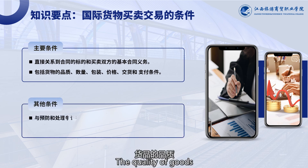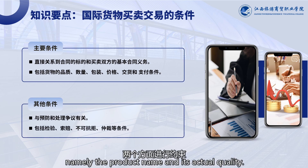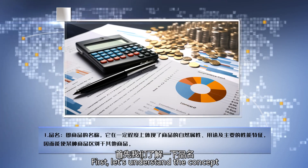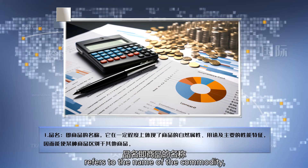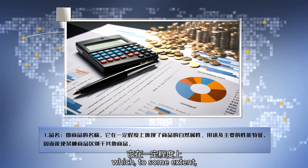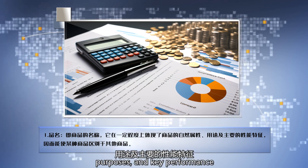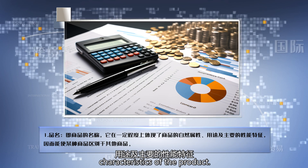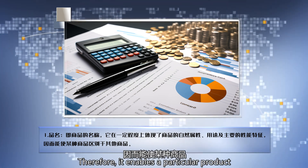The quality of goods is generally constrained by two aspects: namely the product name and its actual quality. First, let's understand the concept of the product name. The product name refers to the name of the commodity, which to some extent reflects the natural attributes, purposes, and key performance characteristics of the product.